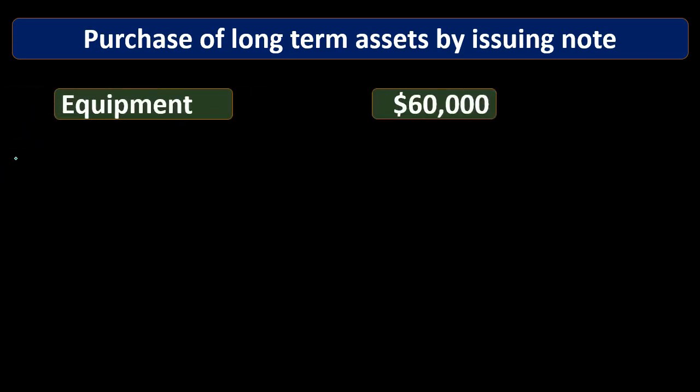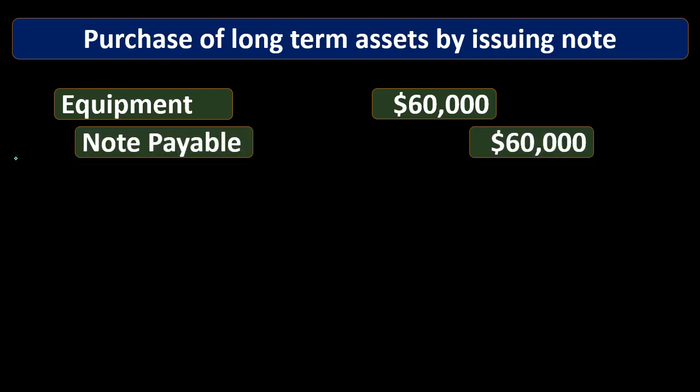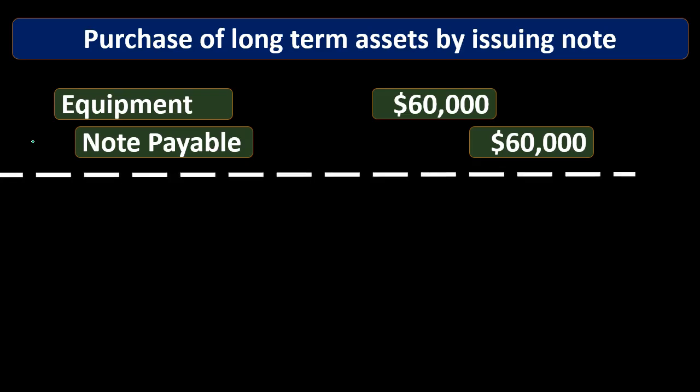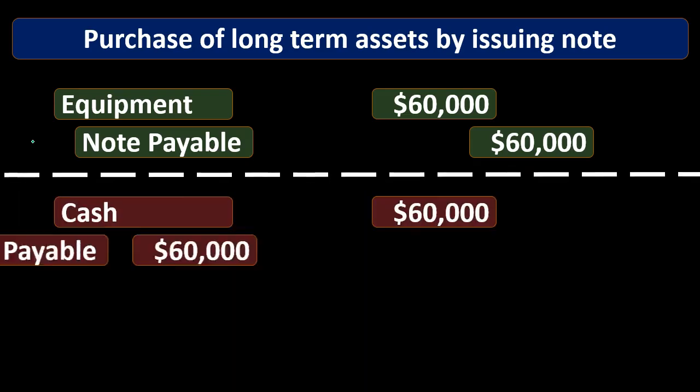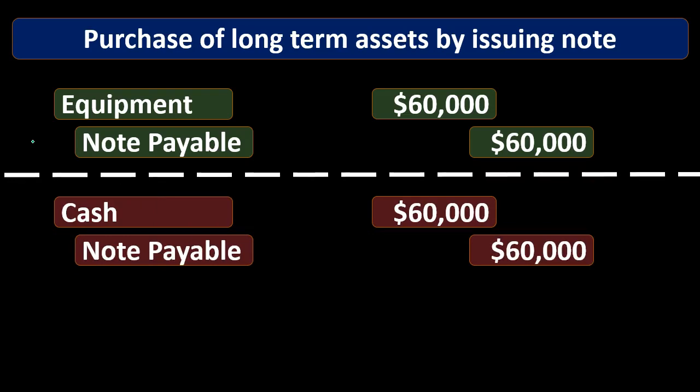We would debit equipment and credit notes payable. No cash is taking place here, so it would not be a cash item. We wouldn't be reporting it on the investing activities, operating activities, or financing activities. But we can also think of this as two things that really happened — we cut out cash as the middle transaction. You can consider this as two transactions that could have taken place and ended in the same result: cash goes up because we took out a loan, then we use that cash to pay for the equipment, ending up in the same place.